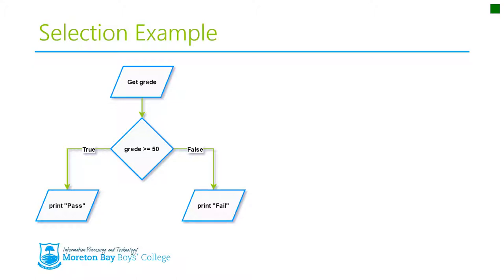So let's start looking at what selection looks like in a bit more detail. Here's an example where someone is going to enter a grade and work out whether that grade is a pass or a fail. The first step is we're getting the user to input their grade, and then we come down to this little diamond here.